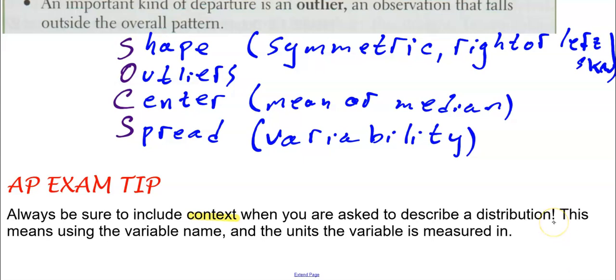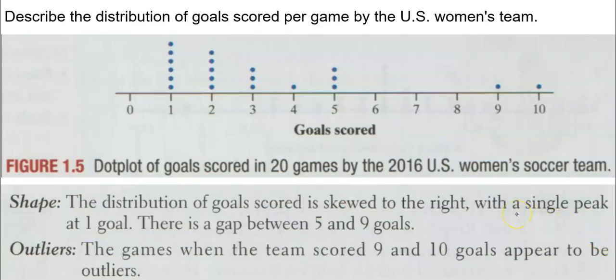Pro tip: always be sure to include context. I cannot express that enough. This class is all about context. So tell me what it means. You're not going to say it has more data on the left than the right. You're going to say the U.S. women's soccer team scored more goals between these two numbers than these numbers.